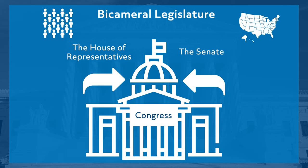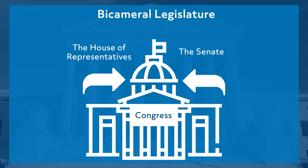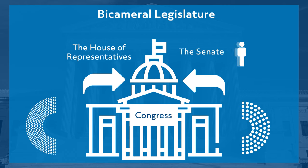Currently, the House of Representatives has 435 voting members and the Senate has 100. There are always two senators per state, but the number of representatives per state varies based on the population of a state.